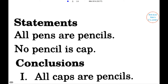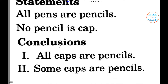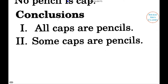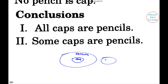Next problem: All pens are pencils. No pencil is a cap. Conclusion one: all caps are pencils. Conclusion two: some caps are pencils. If this is pencils, then this is pens, and this is caps. Clearly, neither conclusion one nor conclusion two follows — option C is the right answer.